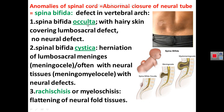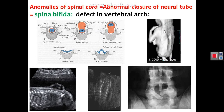Rachischisis or myeloschisis is a flattening of the neural tube — there is no vertebral arch and no neural tube. This condition is associated with severe neuronal defects and the newborn will not survive. Spina bifida can be diagnosed by ultrasound while the baby is in utero, and also by X-ray after birth, which shows the defect in the vertebral arch.